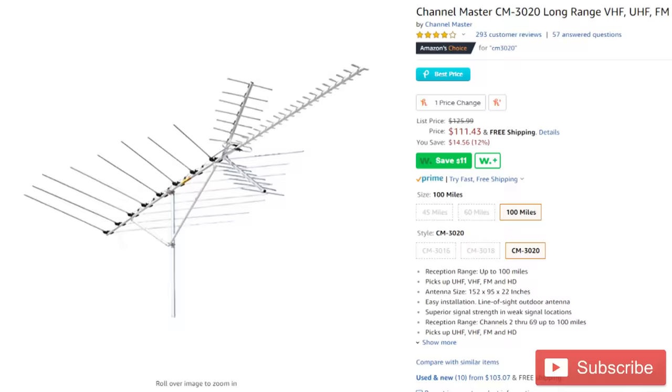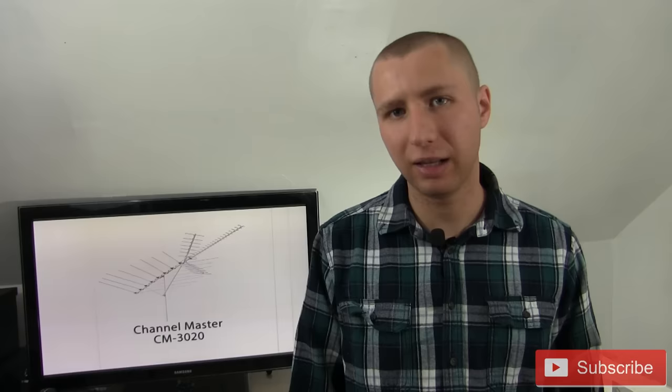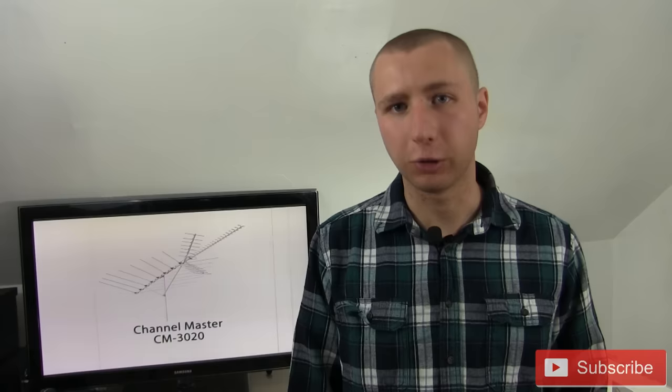This antenna runs for about $130 on Amazon but keep in mind like I mentioned with the other model you will have to purchase some chimney straps or some side brackets and a mounting pole to securely mount it on the side of your house or on the chimney. Make sure it's up there well and doesn't come down as fast as you put it up.